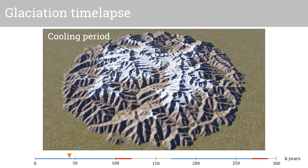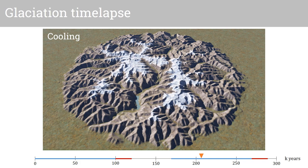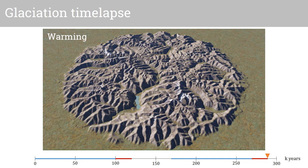The first glaciation covers a large extent and carves the largest glacial valleys. The glaciers developing in the second glaciation are smaller and mainly erode the highest altitudes, which is consistent with geological observations.